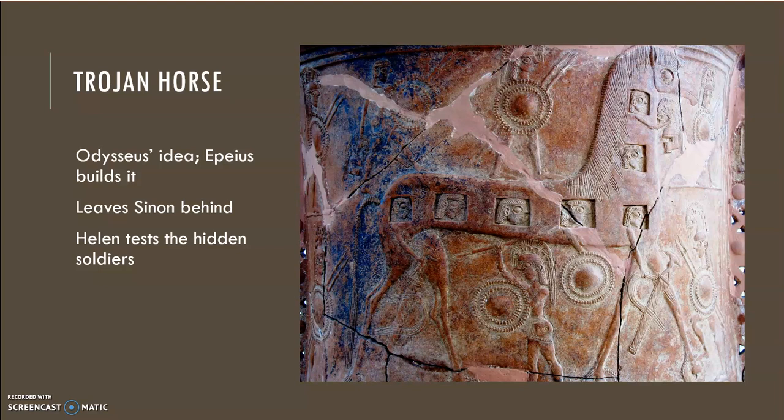When the Trojans bring the horse inside, not everyone is convinced it is truly a gift. Helen comes down to test the horse, pretending to be the wife of warriors who might be inside to try to lure them out. But nobody comes out — Odysseus and the men inside resist all temptation. They wait until night, when Sinon comes and opens the horse to let them out, and that begins the final siege of the city of Troy.